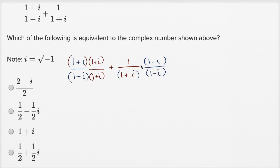We're not changing the value; we're just rewriting it so that we have the same denominator. Notice both denominators are now going to be the same thing: (1+i) times (1-i). Let's figure out what that simplifies to.